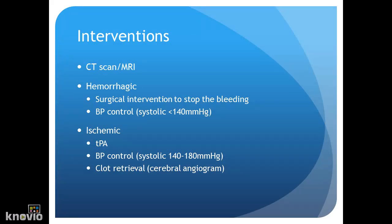On this slide, we're going to discuss the interventions that we would do if a patient presents with a stroke. The first thing that we would do is get a CT scan, so we can determine if the patient has a hemorrhagic or an ischemic stroke. If they have a hemorrhagic stroke, the possible interventions are surgical interventions to stop the bleeding, and once the patient's on the floor, the main thing is to control their blood pressure — we want their systolic blood pressure less than 140 to reduce the risk of any more bleeding.